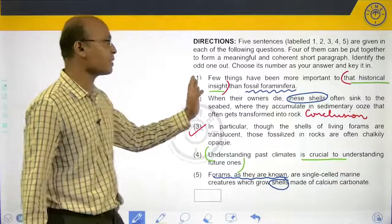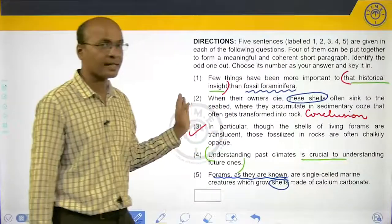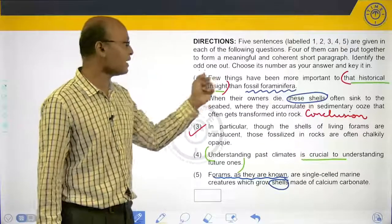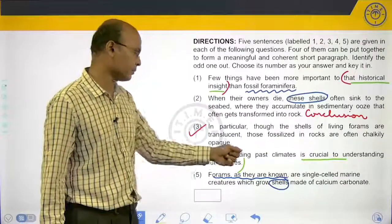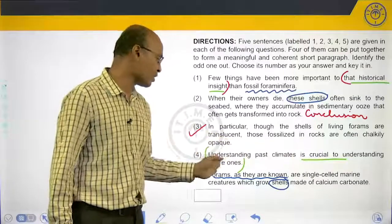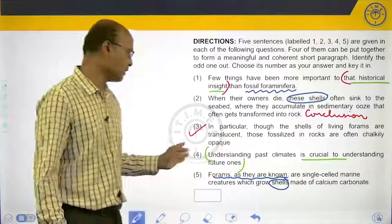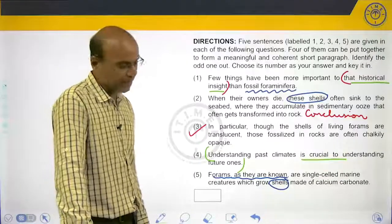We understand that four and one form a mandatory pair because that historical insight has been given in sentence one. Historical insight in one links with is crucial to understanding future ones in the fourth sentence. So four and one form a mandatory pair.